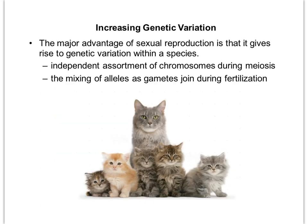The major advantage of sexual reproduction is that it gives rise to genetic variation within a species. A good example is during meiosis — during metaphase one, we have Mendel's law of independent assortment. That means the homologous chromosome pairs are sorting themselves independently of other pairs, which can lead to many different possible combinations of gametes during meiosis.